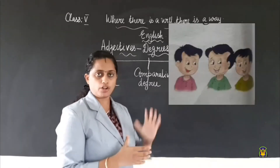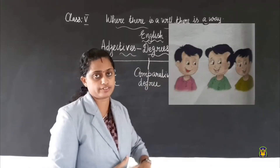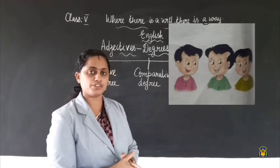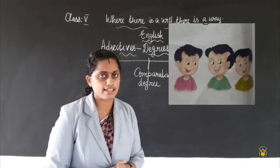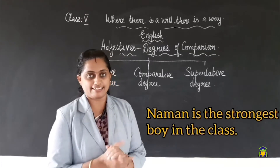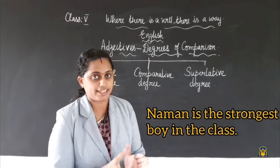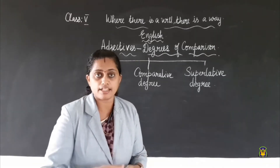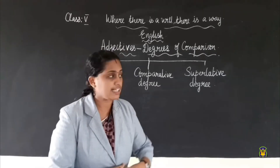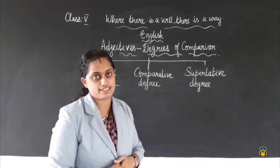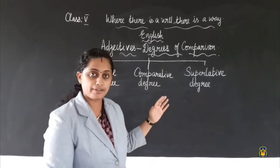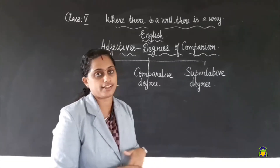Now I have three boys here — Rohan, Satish, and Naman. I have to compare among three of them. I say: Naman is the strongest boy in the class. When we have to compare more than two people or things, we will be using the superlative degree of adjective.